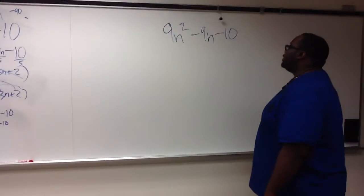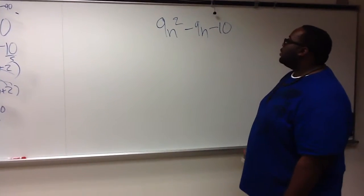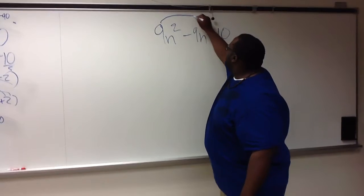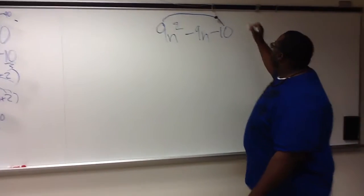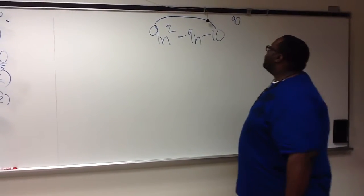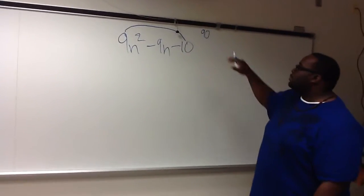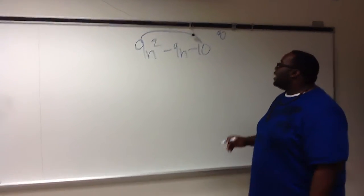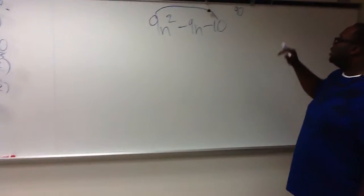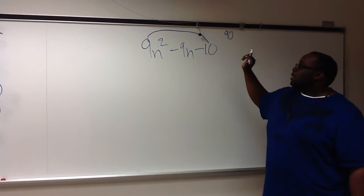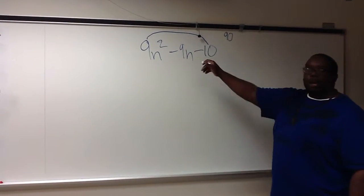Now how are we going to solve this here? First what we've got to do is multiply 9 times 10 equals to 90. Now we've got this 90 sitting up here, and we've got to find out how we're going to use it. Well, first off, we've got to find out what two numbers can multiply and equal to 90 and add to negative 9.